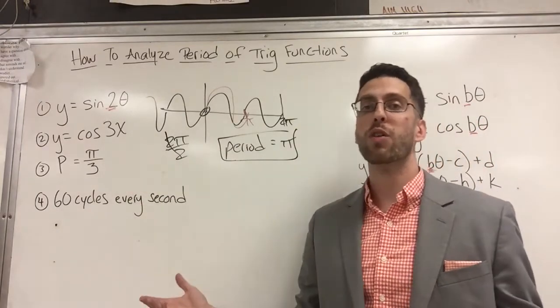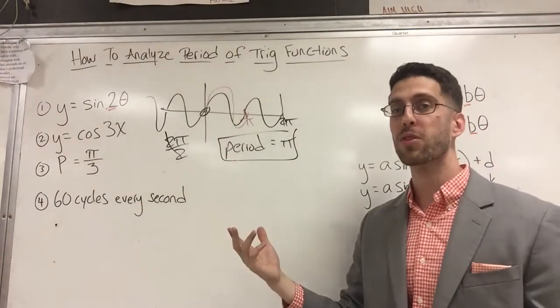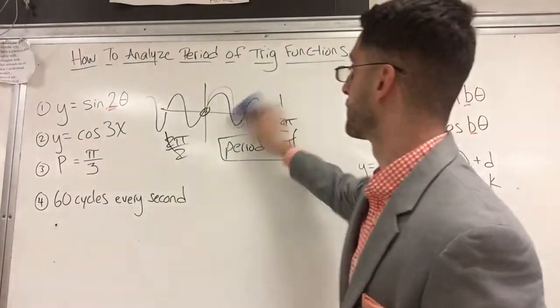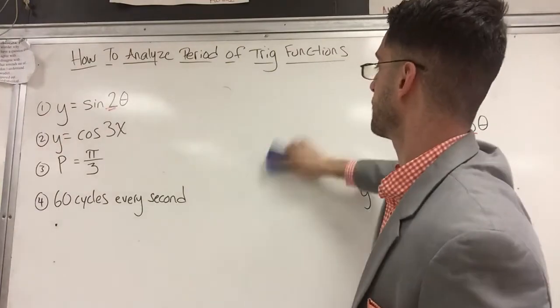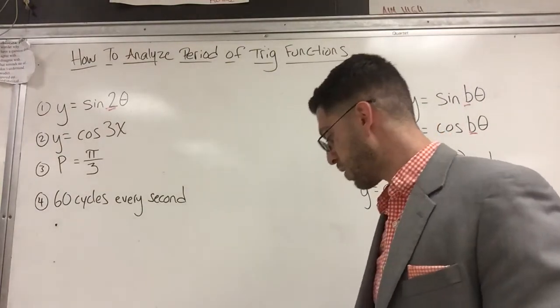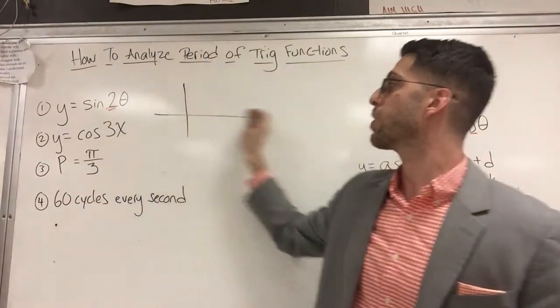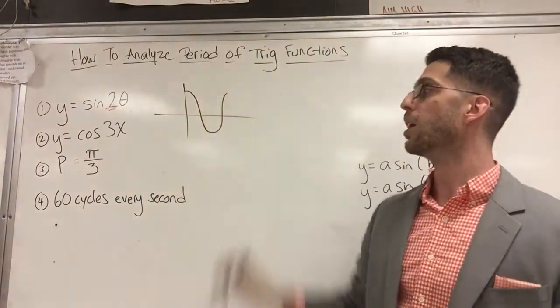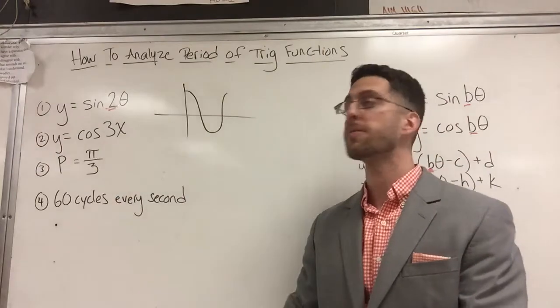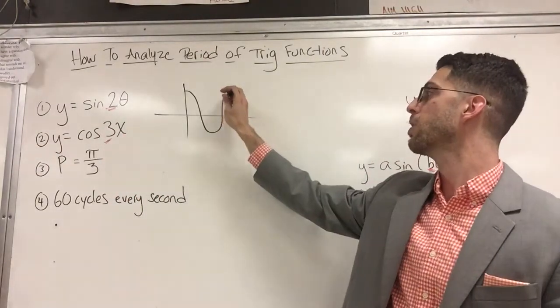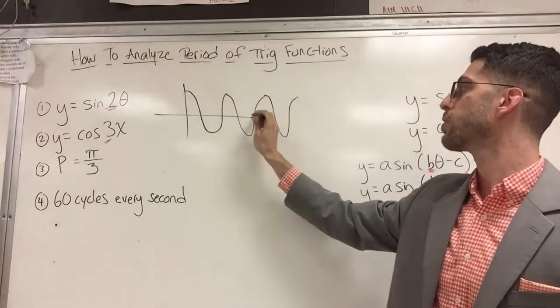See if you can do the next one without even graphing it. Well, I'm going to imagine what the graph looks like and I'm going to sketch it anyway. Here's the cosine curve - it looks kind of like a cup. This is saying that there are three curves from zero to two pi: one, two, three.